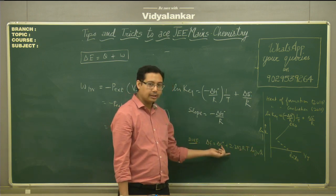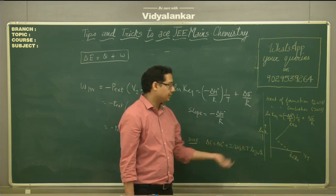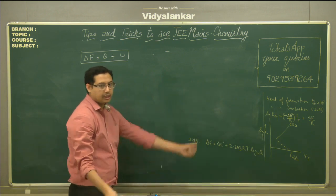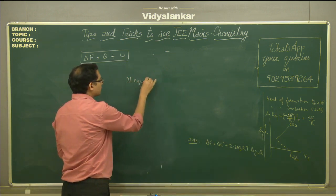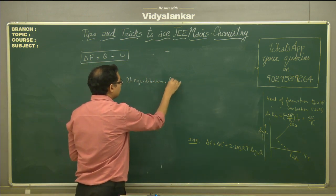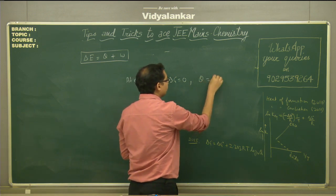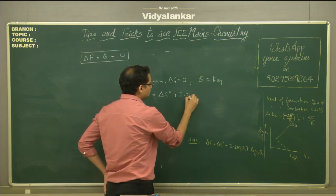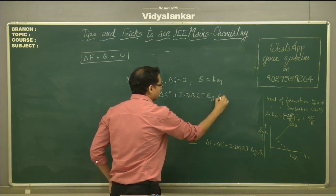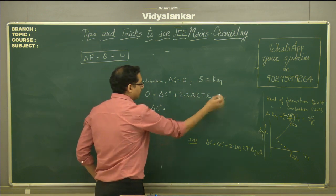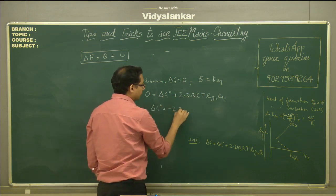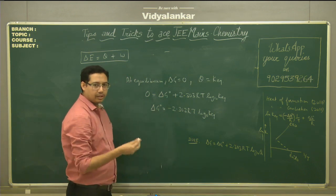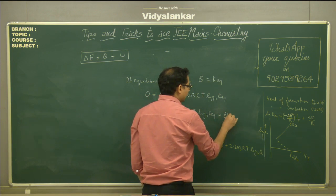ΔG = ΔG° + 2.303RT log Q. At equilibrium, ΔG = 0 and Q = Keq, so ΔG° = −2.303RT log Keq. This gives us the relation between standard Gibbs free energy and the equilibrium constant. Also, ΔG° = ΔH° − TΔS°, which correlates Gibbs free energy with enthalpy and entropy.